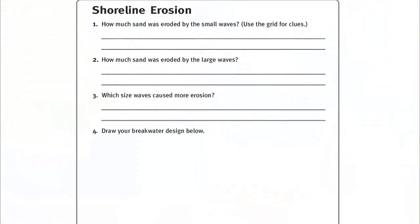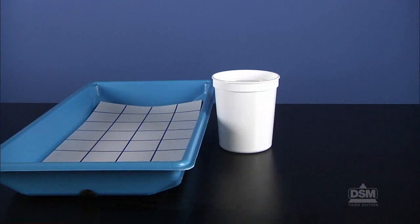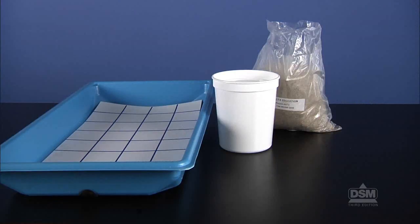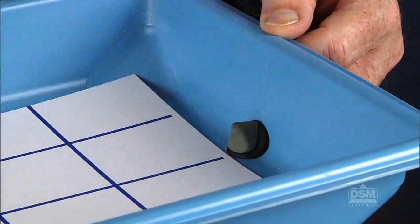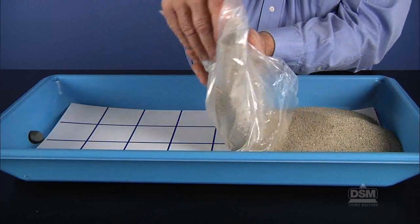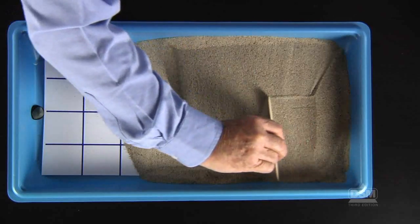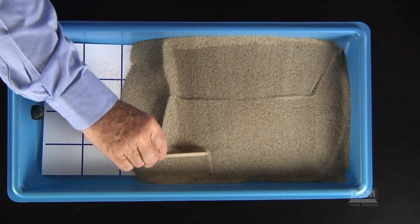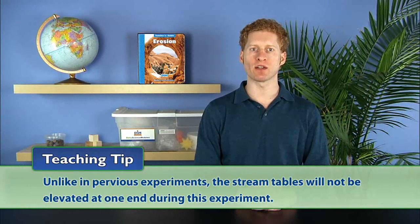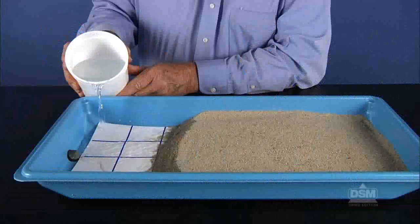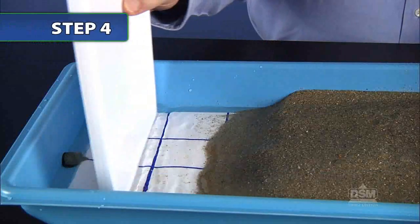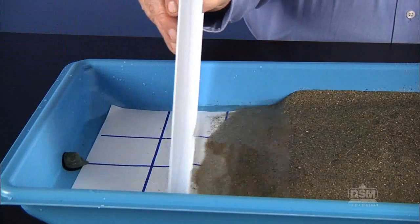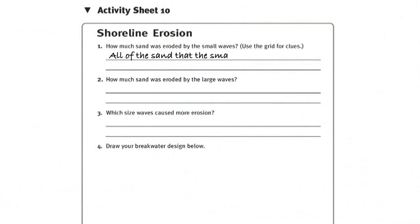Distribute a copy of Activity Sheet 10 to each student. Each team of four will need their stream table, a one liter container filled with tap water, approximately six pounds of sand, a piece of modeling clay, and a plastic tray. Instruct teams to plug the hole in their stream table with a piece of clay, then add sand to the other end, smoothing and gently sloping it to cover two thirds of the stream table. Unlike previous experiments, the stream tables will not be elevated at one end. Instruct students to pour enough water into the empty end so that the water reaches the sand. Have them dip one end of the plastic tray into the water and move it slightly back and forth to create small waves. Tell students to record their observations on Activity Sheet 10, then smooth the sand back to its original condition.